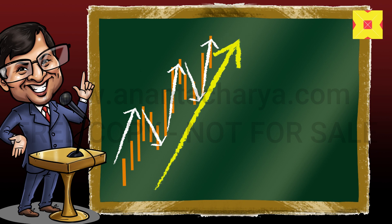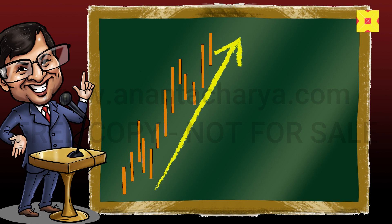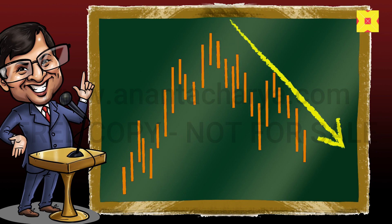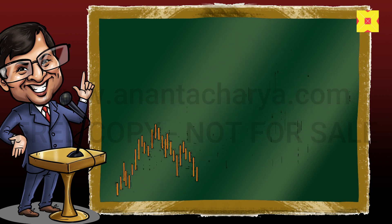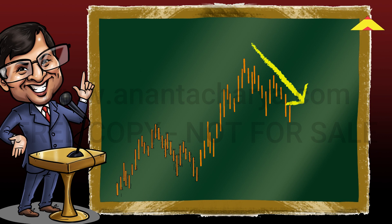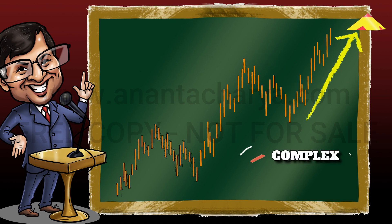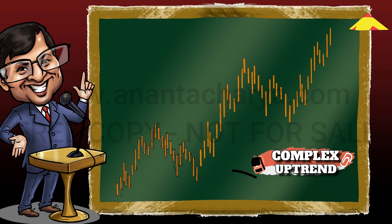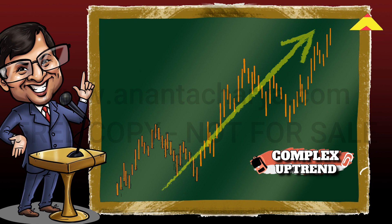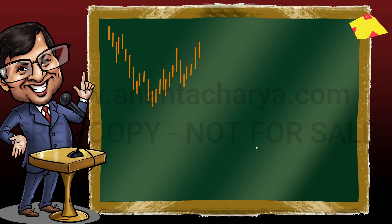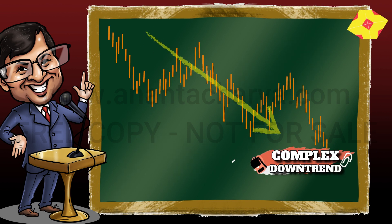These swing trends combine to form complex trends. Here you can see a swing uptrend is followed by a swing downtrend, and that is followed by another swing uptrend, which is corrected by another swing downtrend and so on, to form a larger complex uptrend. The same action is repeated in the opposite direction in a complex downtrend.